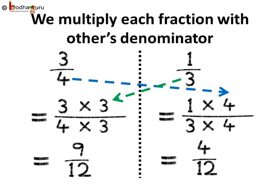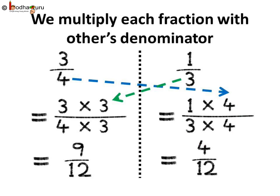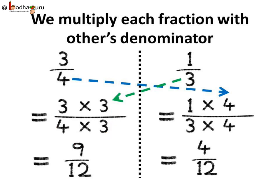In three by four, multiply the numerator and denominator by three. And in one by three, multiply the numerator and denominator by four. Thus, three by four can be written as three into three divided by four into three, which is nine by twelve.